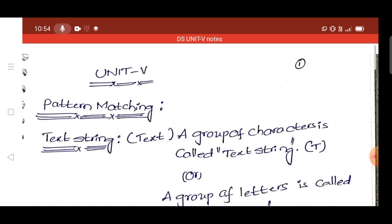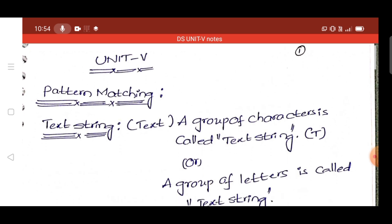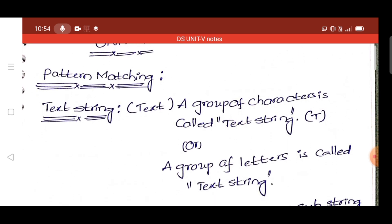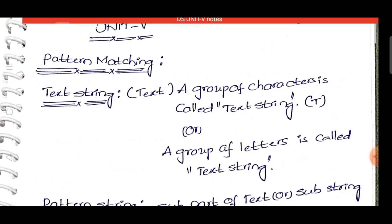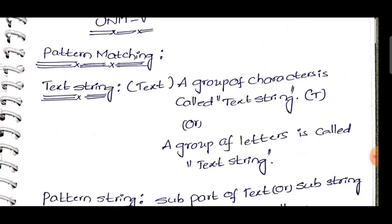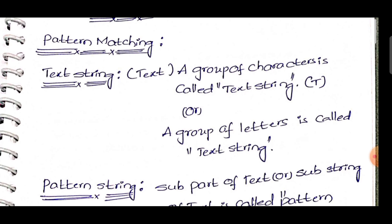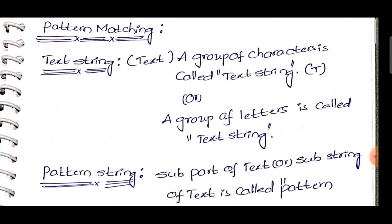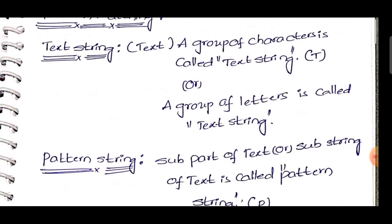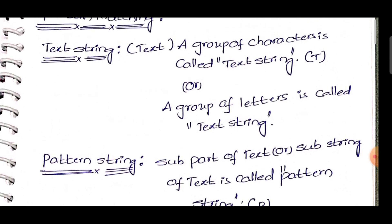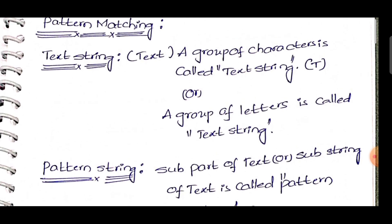There are two main concepts: text string and pattern string. The group of characters is called a text string — another definition: a group of letters is called a text string. The sub-part of the text string is called a pattern string, also called a sub-text string.